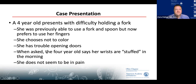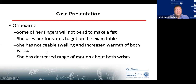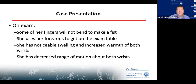On exam, some of her fingers will not bend to make a fist. She uses her forearms to get on the exam table. You find noticeable swelling and increased warmth of both wrists with decreased range of motion.